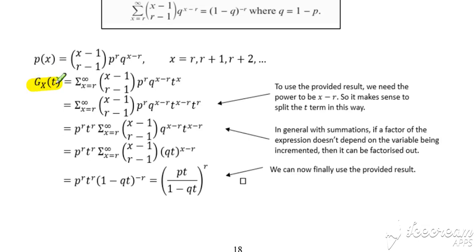So for a negative binomial, remember the x value starts at r and we sum from r to infinity. This is our probability formula multiplied by t^x. Now to use the result above, we need to observe that the power of q is x-r here, so we need the power to be x-r.